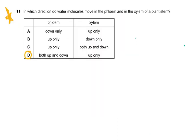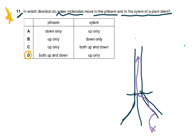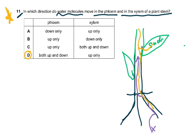Question eleven asked about the direction water molecules move in the phloem and xylem of a plant stem. In the xylem, water from the soil enters at the roots and moves upwards. Phloem is different — glucose is made in leaves, converted to sucrose, and enters the phloem. Some sucrose travels down to the roots, which cannot photosynthesize, and some travels upward to structures like flowers that also cannot photosynthesize.